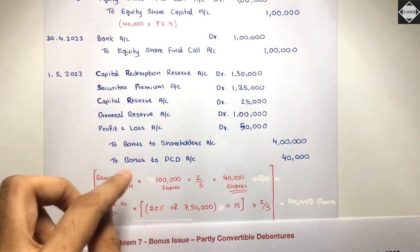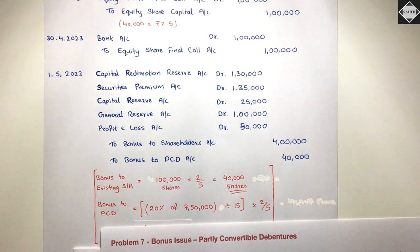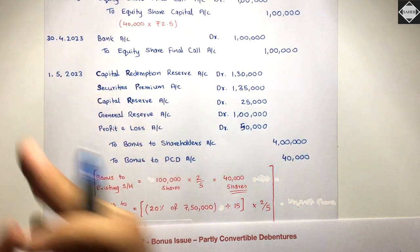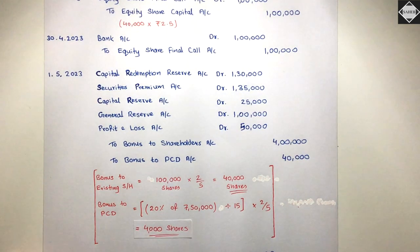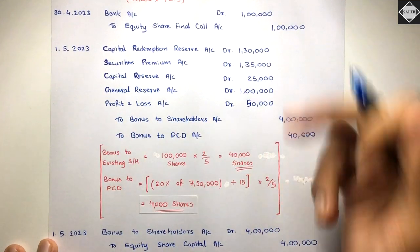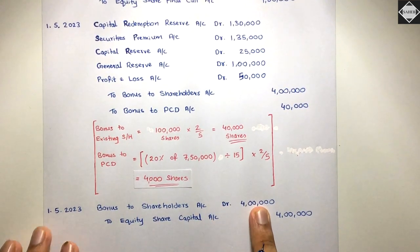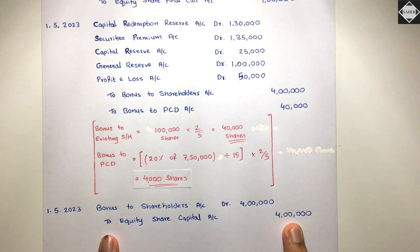All these reserves decrease and the money flows to two accounts: Bonus to Shareholders Rs.4 lakh, and Bonus to PCD Rs.40,000. On 1st May, bonus shares are issued only to existing shareholders — not to PCD holders (they get shares at conversion date). Entry: Bonus to Shareholders Account Dr. Rs.4 lakh, to Equity Share Capital Account Rs.4 lakh. The Bonus to PCD account remains in reserves and surplus until 1st July.